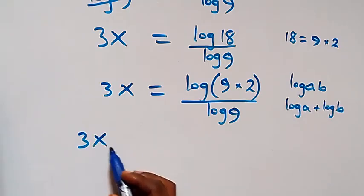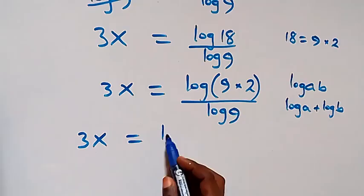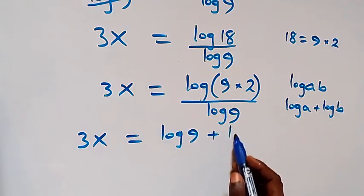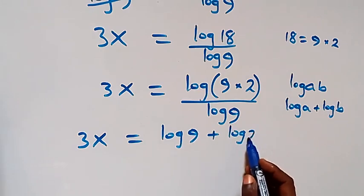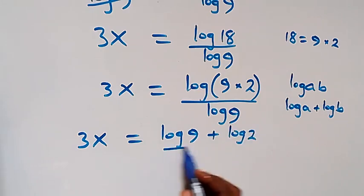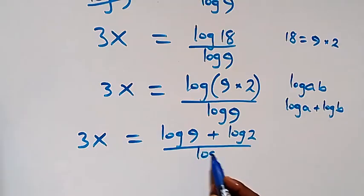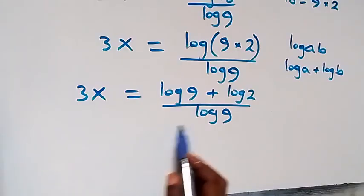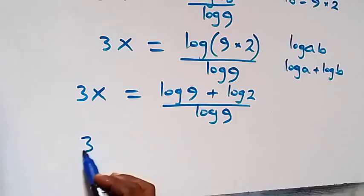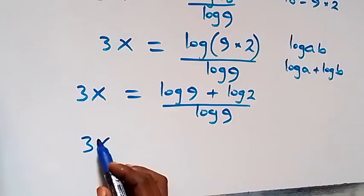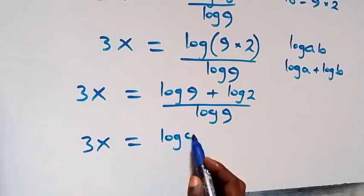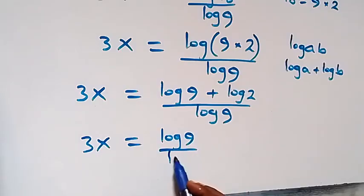When we separate this, this becomes 3x equals to log 9 plus log 2, over log 9. From here we can separate this fraction, and this becomes 3x equals to log 9 over log 9 plus log 2 over log 9.